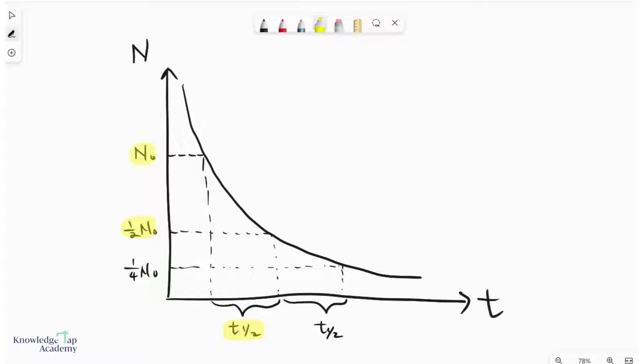So of course, as you can see from this graph, when the number of undecayed nuclei goes from N₀ to half of that, that time span over there is officially called the half-life.